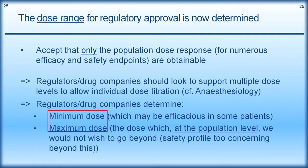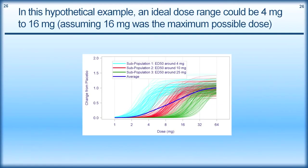If we saw adverse events across 1,000 individuals at a sufficiently high rate, that would define our maximum dose that patients could be titrated up to. By doing that, we've identified the dose range for regulatory approval — from the minimum dose where some patients could be responding, through to a maximum limiting dose. Between those two doses, the physician can titrate to achieve a certain pharmacodynamic response. In our hypothetical example, an ideal dose range could be 4 mg through to 16 mg.